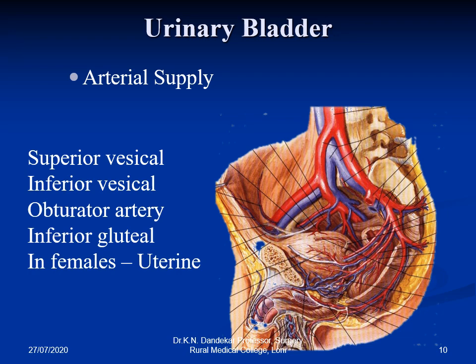The bladder is a significantly vascular structure — it bleeds a lot when injured or operated on because of its abundant blood supply. For the same reason, bladder injuries heal very well. The arterial supply constitutes the superior vesical artery, inferior vesical artery, obturator artery, and inferior gluteal artery in both males and females; in females, additional uterine branches supply the bladder.